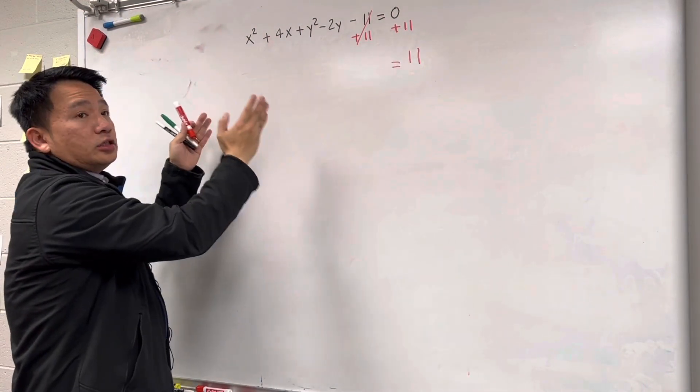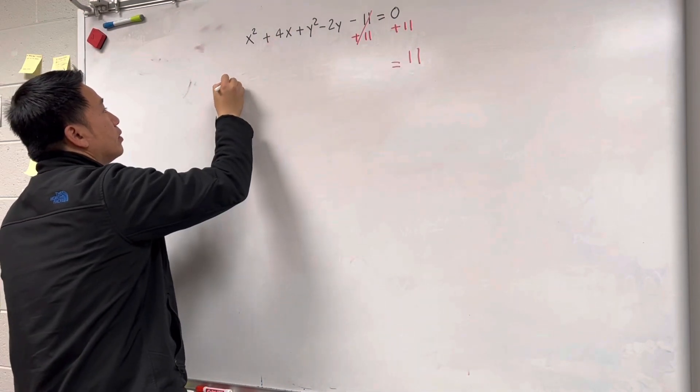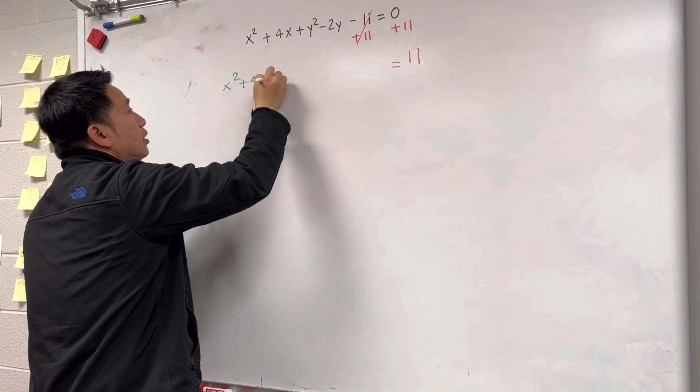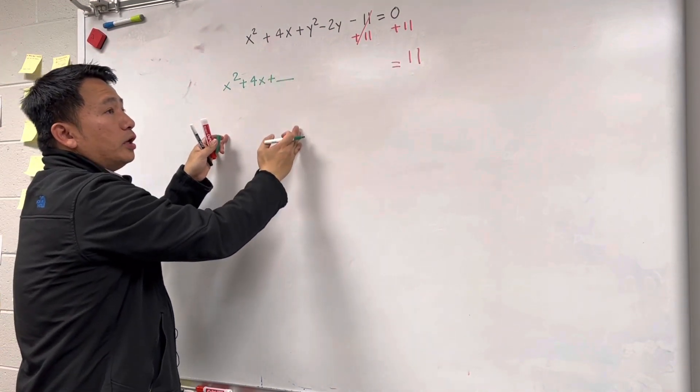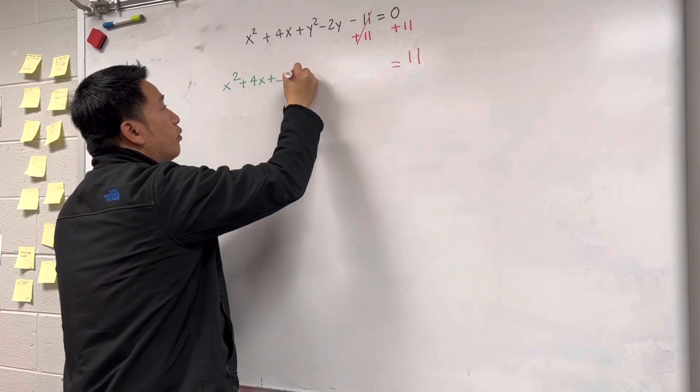And not only isolate the constant, please organize x and y, okay? So, x squared plus 4x, and please leave a blank for x because we want to form a perfect square trinomial. And please leave a blank for y.